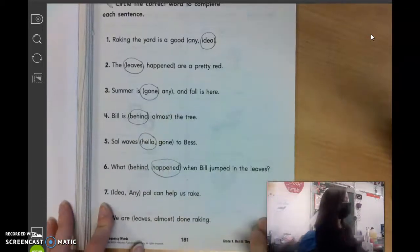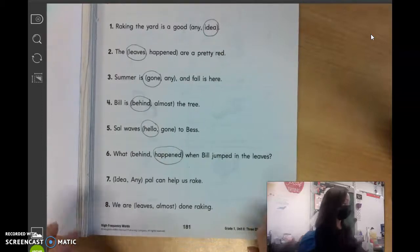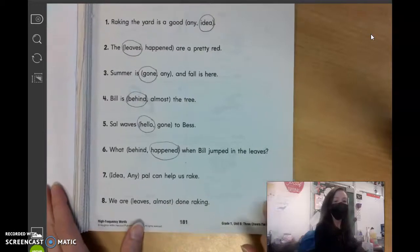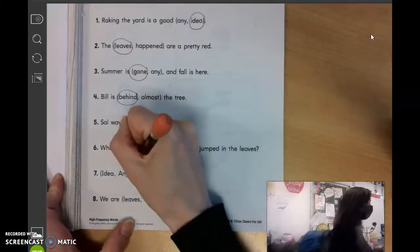Number seven, blank pal can help us rake. Vivian? Any pal. Yep, like any friend.